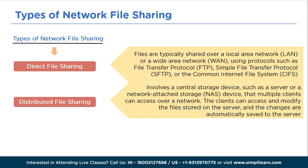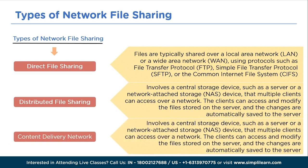Examples of distributed file sharing systems include Microsoft File Server, Novell Network, and Sun Microsystems Network File System (NFS). Another type is the content delivery network (CDN). CDNs are a type of distributed network consisting of servers located around the world that cache and deliver web content to users with high speed and low latency. They work by caching and delivering content from edge locations closer to users.